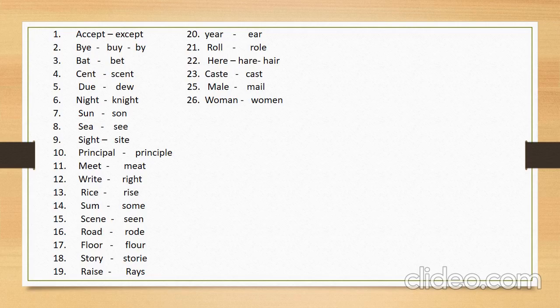Number seventeen: 'floor,' meaning manzil. Its similar in sound word is 'flour,' meaning atta. Number eighteen: 'story,' meaning kahani. Its similar in sound word is 'storey,' meaning manzil — as in single storey or double storey. Generally, the word 'storey' is used more in Asia Pacific, i.e., the Indian region, whereas the British or Americans mostly use 'floor.'